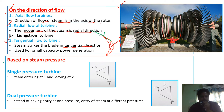Now let us move on to the classification based on steam pressure. There are two types: single pressure turbine and dual pressure turbine. In a single pressure turbine, as you can see in this figure, steam enters the turbine at one pressure (point 0.1) and leaves the turbine at a particular pressure (point 0.2).